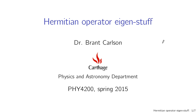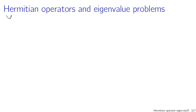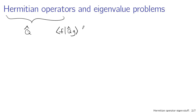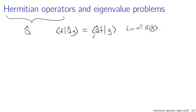Let's continue our discussion of the mathematical formalism of quantum mechanics by considering Hermitian operators and the eigenvalue and eigenvector problems that result from their consideration. For a Hermitian operator Q-hat, the operator is Hermitian if the inner product of some arbitrary state f with the operator acting on state g equals the operator acting on f, inner product with g — for all f and g. These operators show up a lot in quantum mechanics because Hermitian operators correspond to observable quantities.